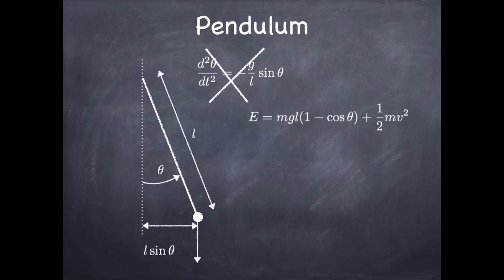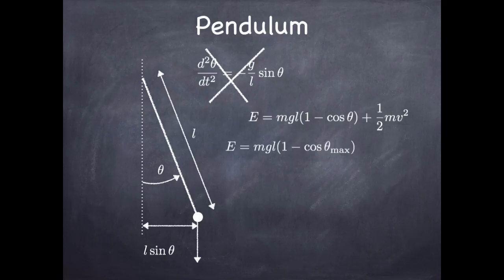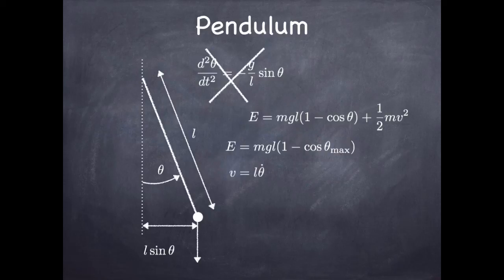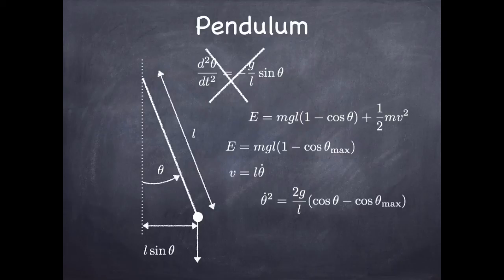We write out the energy of the mass as gravitational potential energy plus kinetic energy. When the angle is a maximum, the kinetic energy is zero, so the energy is also mgL times (1 − cosθ_max). The amplitude of the oscillation is the maximum angle. That means we can write the energy in terms of the maximum angle, write the velocity in terms of the rate of change of the angle, and recast the whole thing in terms of angle, cosine of the angle, and cosine of the maximum angle, getting an expression for θ̇². The kinetic energy ½mv² gives ½mL²θ̇² and so on.